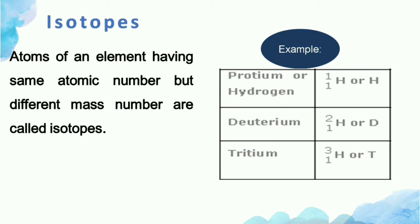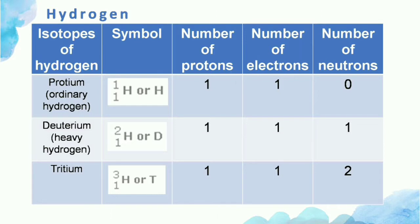The mass numbers of isotopes differ because they contain different numbers of neutrons. Since mass number is the sum of protons and neutrons, any difference in neutrons results in a different mass number. All three isotopes of hydrogen have the same number of protons and electrons. In protium there is no neutron, in deuterium there is one neutron, and in tritium there are two neutrons. Note that hydrogen is the only element with no neutron in its nucleus.